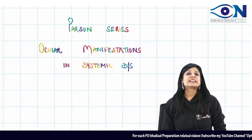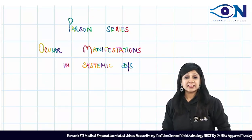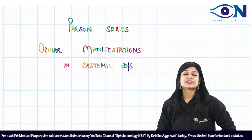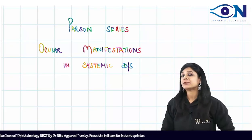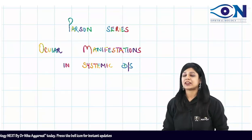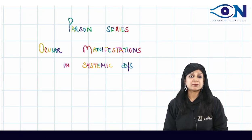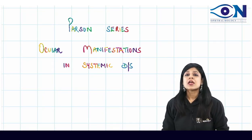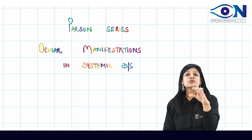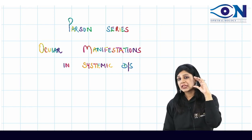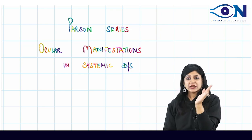Welcome to the Parsons series. This is a very important topic: the ocular manifestations of systemic diseases. We have covered it previously in our notes, but it is very important to go through Parsons because sometimes they specifically choose an image from the book and give it to you. Let's get started.